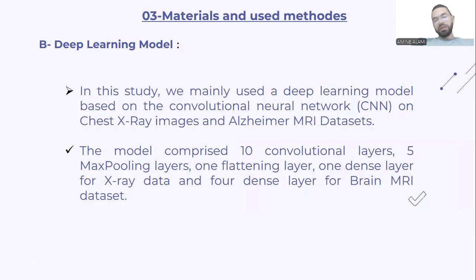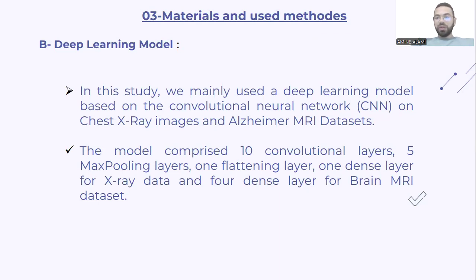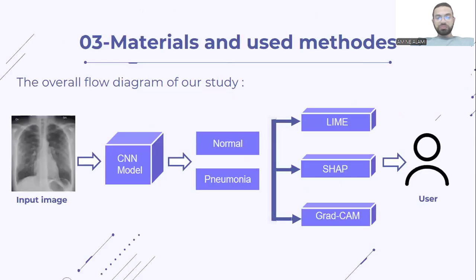Here is the deep learning model used. We used a CNN comprising 10 convolutional layers, 5 max-pooling layers, 1 flattening layer, and finally 1 dense layer for the X-ray data and 4 dense layers for the brain MRI dataset because it contains 4 output categories. Now we have the overall flow diagram of our study: we input an image to our CNN model to predict the category — whether normal or pneumonia — then we explain the result using LIME, SHAP, or Grad-CAM.